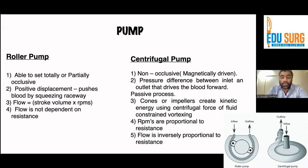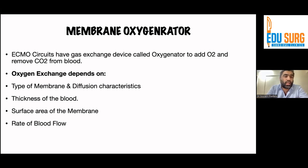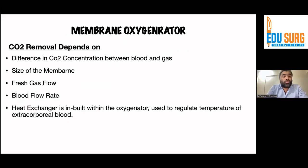Talking about the membrane oxygenator — ECMO circuits have gas exchange devices called oxygenators to add oxygen and remove carbon dioxide from the blood. Earlier, silicon membrane oxygenators were used, which are currently replaced by hollow fiber polymethyl pentane oxygenators. They are extremely efficient at gas exchange and demonstrate minimal plasma leak, with low resistance to blood flow. Oxygen exchange depends on type of membrane and diffusion characteristics, thickness of blood, surface area of the membrane, and rate of blood flow. CO2 removal depends on the difference in carbon dioxide concentration between blood and gas, size of the membrane, fresh gas flow, and blood flow rates.